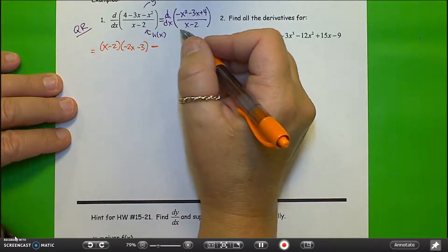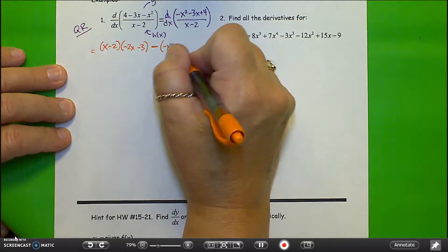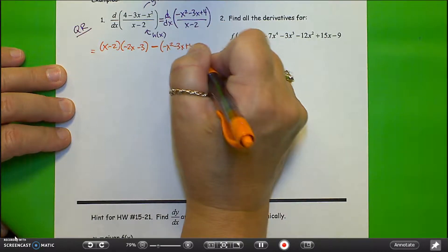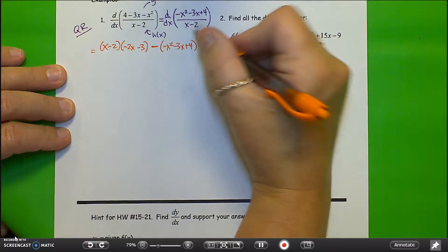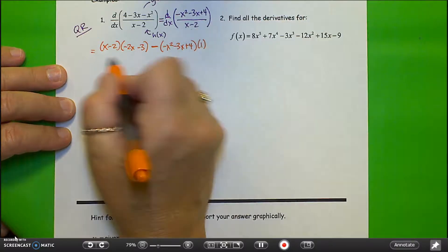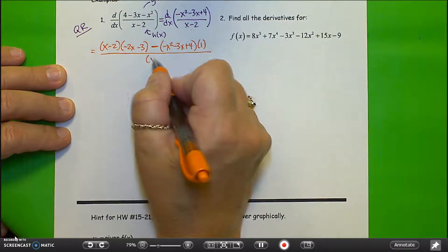So the derivative of the top here is minus 2x minus 3, and then you subtract from that the top function, minus x squared minus 3x plus 4, times the derivative of the bottom, and the derivative of that is just going to be 1,